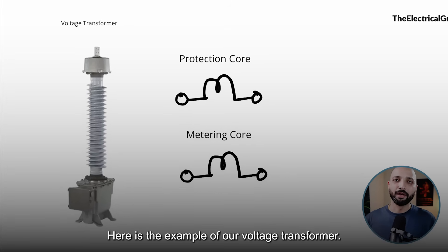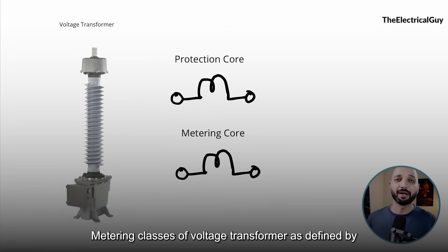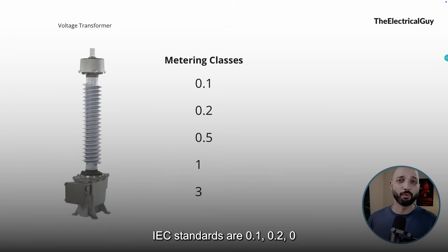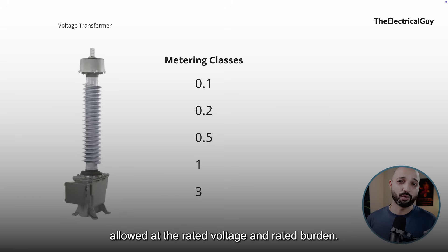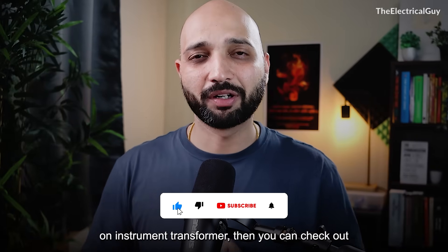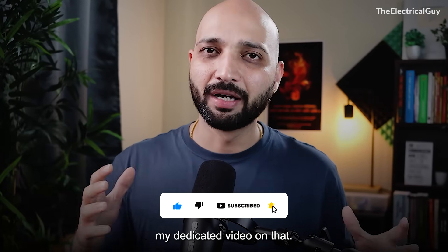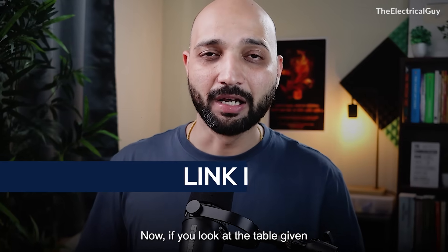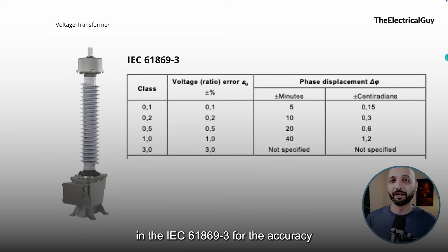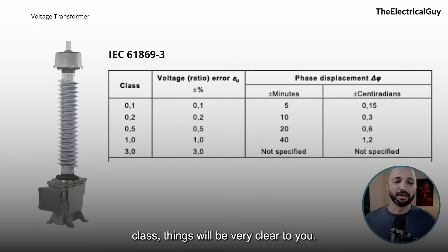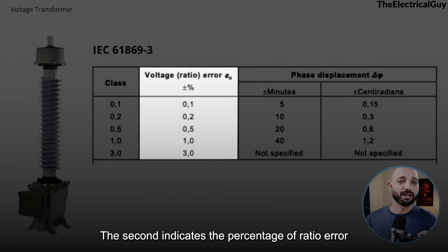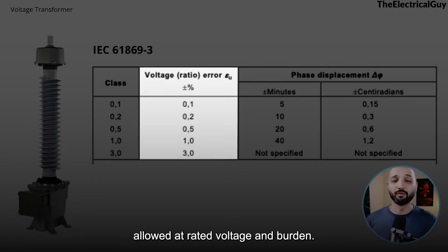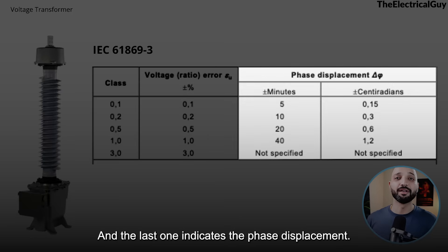Here is an example for the voltage transformer. The metering classes of voltage transformers as defined by IEC standards are 0.1, 0.2, 0.5, 1, and 3. This basically indicates the percentage of ratio error allowed at the rated voltage and rated burden. If you look at the table in IEC 61869-3 for accuracy classes, things become very clear. The first column indicates the class name, the second indicates the percentage of ratio error allowed at rated voltage and burden, and the last column indicates the phase displacement.